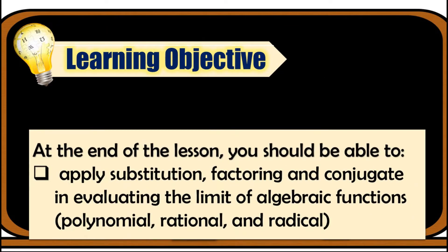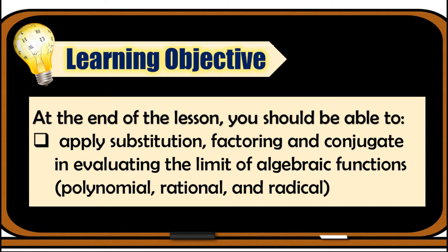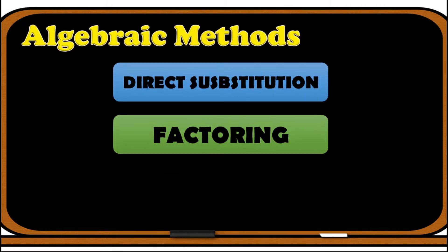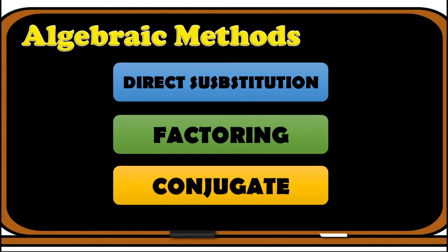Here is the learning objective. At the end of the lesson, you should be able to apply substitution, factoring, and conjugate in evaluating the limit of algebraic functions like polynomial, rational, and radical. In the previous video, we learned to evaluate the limit of a function using the limit theorems. Aside from that, we may actually opt to use algebraic methods — direct substitution, factoring, and conjugate — meaning we may not religiously follow the limit theorems.